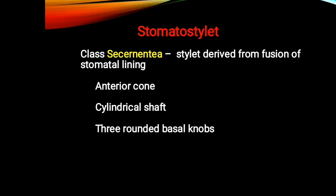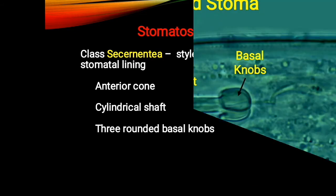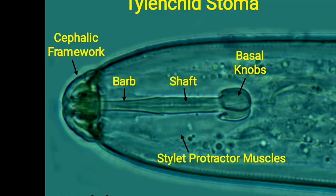The mouth region comprises two major stylet types: stomatostellate and odontostellate. The stomatostellate belongs to the class Secernentea, which is the phasmid group. This stylet is derived from fusion of all the stomatal lining and comprises an anterior cylindrical shaft and three rounded basal knobs. The surrounding region of the stylet has protractor muscles, and anterior to it is a cephalic framework.